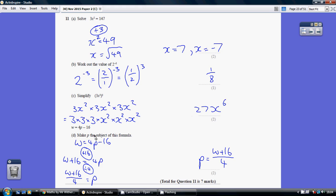Now part D. Make P the subject of this formula. Now remember what that means. You need to end up not with it being W equaling stuff but P equals stuff. So we need to make decisions to make P be on its own. P equals something.